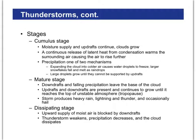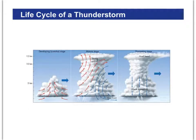These three stages are going to correspond to a diagram in your notes about the formation of thunderstorms. The three stages are the cumulus stage, the mature stage, and the dissipating stage. Instead of reading all this to you, I'm going to flip to the actual diagram and you're going to follow along and mark that in your notes.